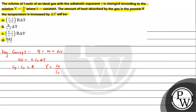From Mayer's relation we can write Cp minus Cv equals R. Since Cp equals Cv times gamma, substituting gives Cv times gamma minus Cv equals R, so Cv times (gamma minus 1) equals R. Therefore Cv equals R divided by (gamma minus 1).